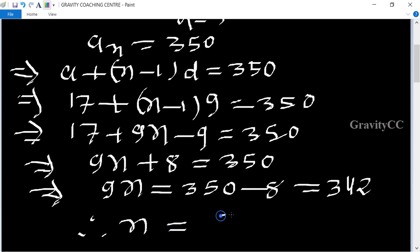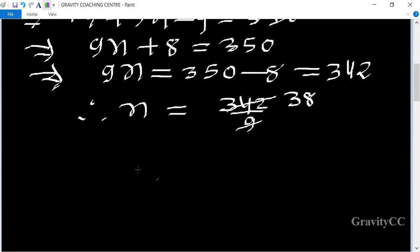Therefore n equal to 342 upon 9. 9 times 38 is 342, so n equal to 38. Hence, there are 38 terms in this AP.